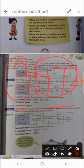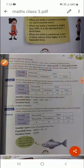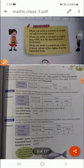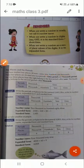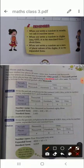We have studied four places: ones, tens, hundreds, and thousands. These four places are divided into two periods - the ones period and the thousands period.